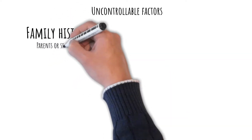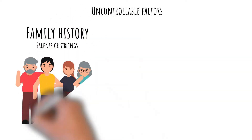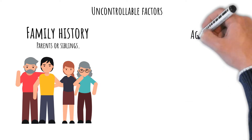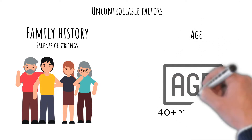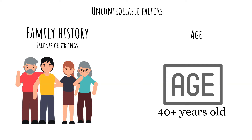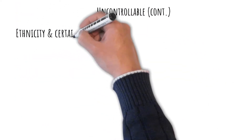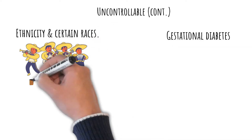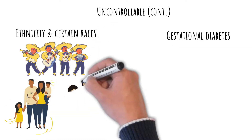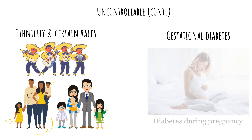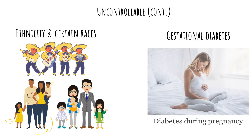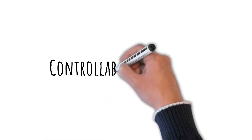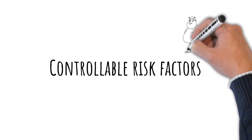Uncontrollable risk factors include the following. Family history: having a blood-related parent or sibling with diabetes. Age: the risk increases proportionally with age and accelerates after the age of 40 to 45. Ethnicity: people of certain ethnicities and races, such as African, Caribbean, Asian, and Hispanic, are at higher risk for developing diabetes type 2. Another risk factor is gestational diabetes — women who have experienced it are at 50% risk of developing type 2 diabetes later in life.